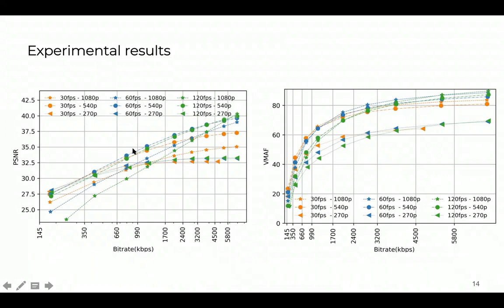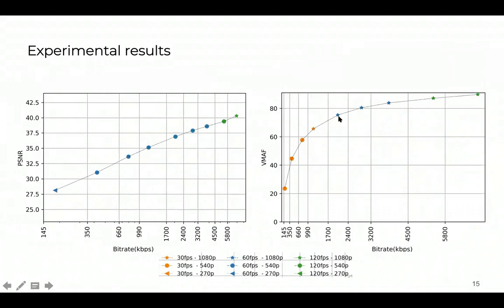We see encoding efficiency for all representations with different spatial or temporal resolutions used in this paper using both PSNR and VMAF as objective metrics. Based on this encoding efficiency, we form convex hulls. For example, using VMAF as the objective metric, we can see that for lower bitrates it is usually the lower frame rate that is used to form the convex hull, while for higher bitrates it is usually the higher frame rate that is selected. We can easily see here the impact of frame rate on encoding efficiency and on the convex hull.